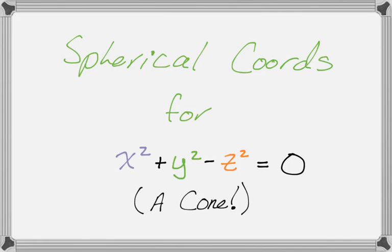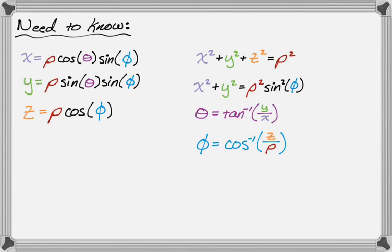And let's see what we can do. So for starters, you need to know all of this stuff. So you need to know that x is rho cosine theta sine phi, y is rho sine theta sine phi, z is rho cosine of phi, then you need to know how to find rho, theta, and phi.